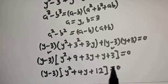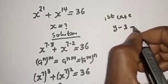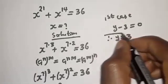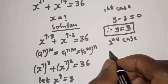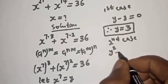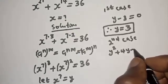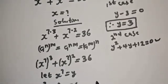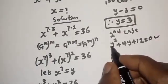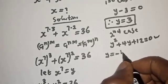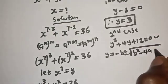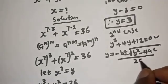There are two cases. The first case is y minus 3 equals 0, giving y equals 3. The second case is y squared plus 4y plus 12 equals 0, which is a quadratic equation solvable using the quadratic formula: y equals negative b plus or minus square root of b squared minus 4ac, all over 2a.